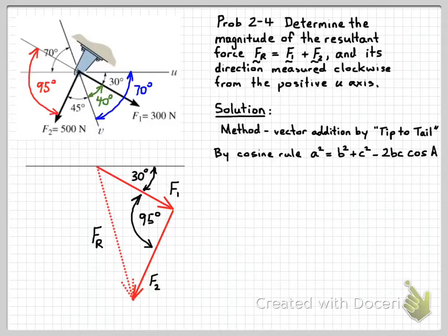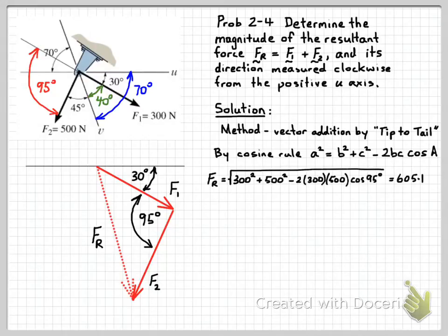So in this case, a is the side FR, and capital A is the angle 95 degrees, and the b and c are the other two sides. So F1 and F2 are the b and c in the cosine rule equation. If we take the square root of both sides and substitute in all our values, we can solve for our unknown resultant force FR. And that gives us 605.1 newtons.